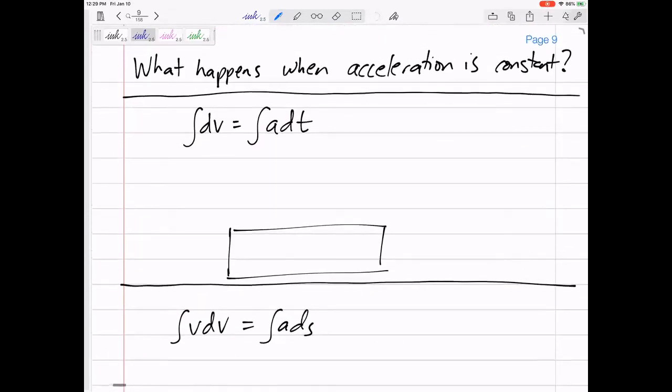What if acceleration is constant? You could use your integrals, but let's make it a little bit easier. Because when acceleration is constant, you can take the acceleration out of the integral, which makes this a lot easier. So I'm going to evaluate v final minus v initial, and this is t evaluated t final minus t initial. Nine times out of ten, we're starting with t of zero. So let me just rearrange this equation: v final equals v initial plus at.